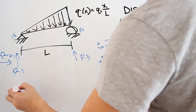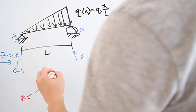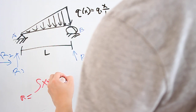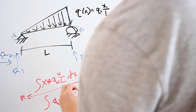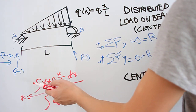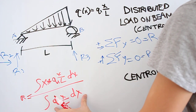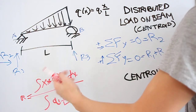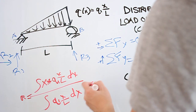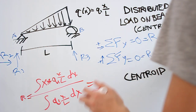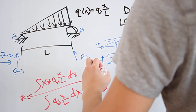For the centroid, the distance a is given by the integral of x times q(x) dx, divided by the total load we found before. You're multiplying each load value by its position and dividing by the total — essentially a weighted average to find a distance. If you work through the algebra and calculus, you get two-thirds L.